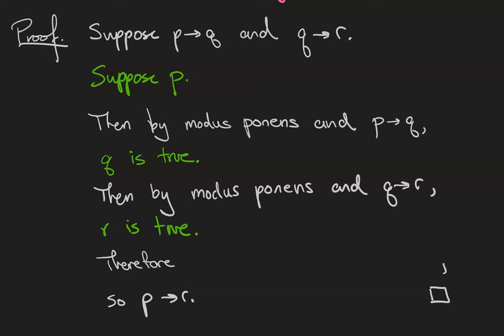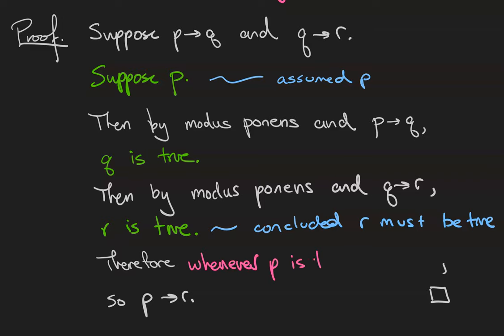So what we've done is we assumed p and concluded r must be true. So what that means is whenever p is true, r is true as well. Therefore, whenever p is true, so is r. So what that means is that the statement if p then r is true. And that's what transitivity says, it says that if you have if p then q and you have if q then r, then you also have if p then r.